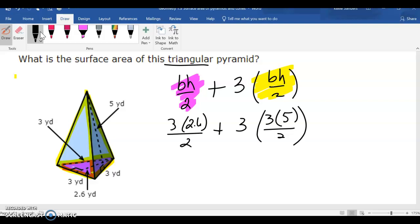I shouldn't have done that way. 3 times 2.6 divided by 2 is 3.9. 3 times 5 divided by 2 times 3 is 22.5 plus the 3.9 is 26.4 yards squared.